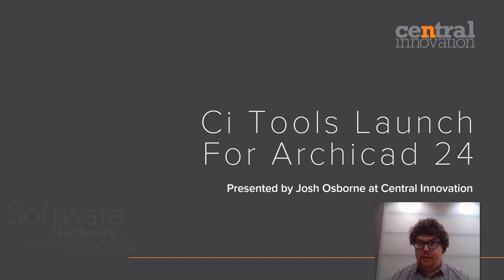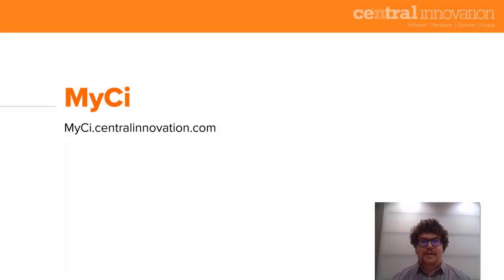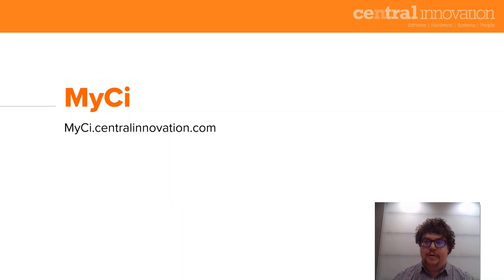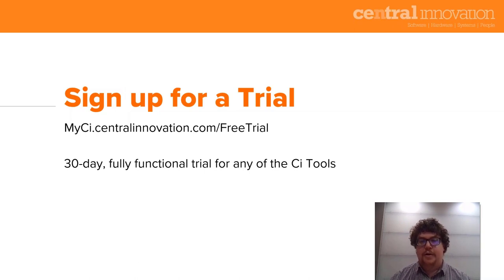You can get the CI Tools from my CI — the address is myci.centralinnovation.com. Log in, go to the CI Tools section, then to Get Tools, and you'll be able to download the installer for Windows or Mac OS. It supports all ARCHICAD versions from 18 up to 24, so it will find what versions you have installed and let you install the tools for those. If you don't already have a my CI account, you can head to myci.centralinnovation.com/freetrial and set yourself up with a 30-day fully functional trial.